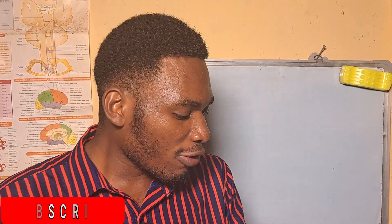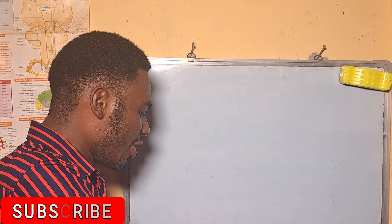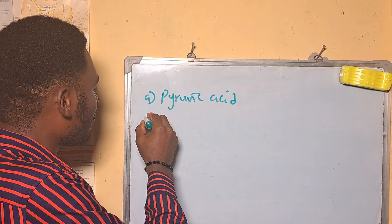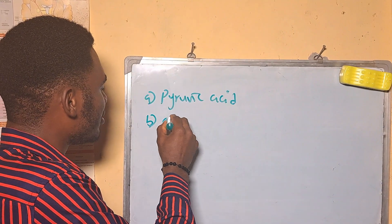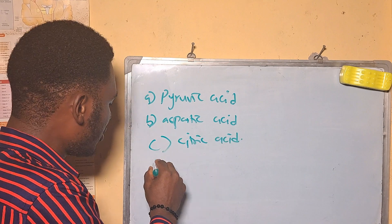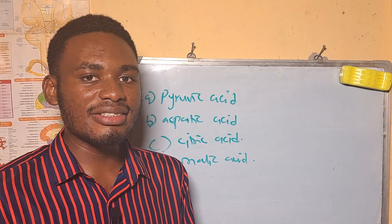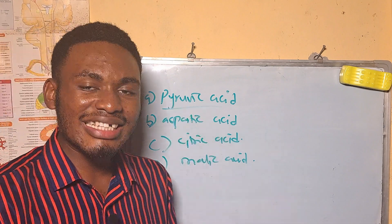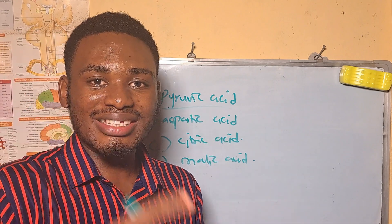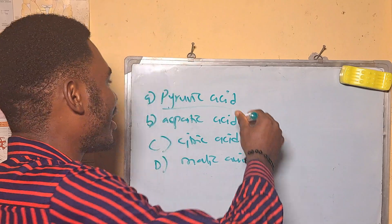Our first question: the end product of glycolysis in plants and animals is — A: pyruvic acid, B: aspartic acid, C: citric acid, D: malic acid. The answer is A, pyruvic acid, because glycolysis is the first stage in cellular respiration that oxidizes glucose to pyruvate or pyruvic acid.